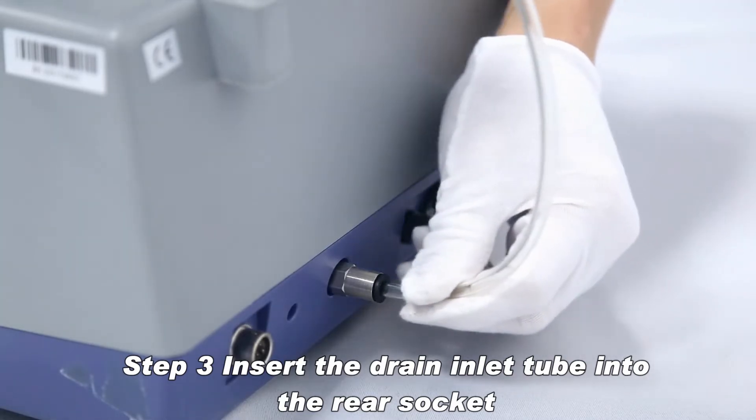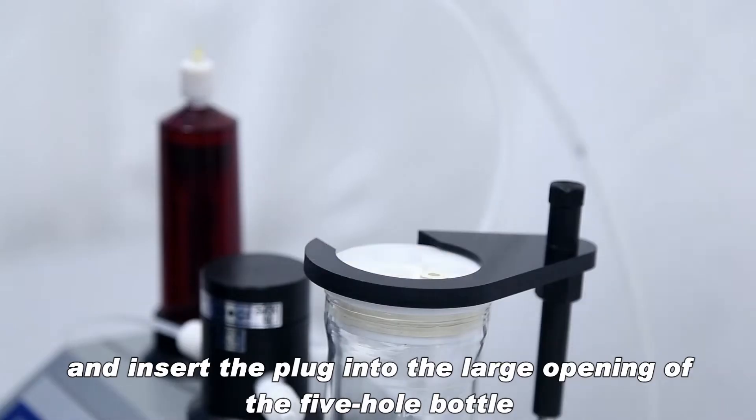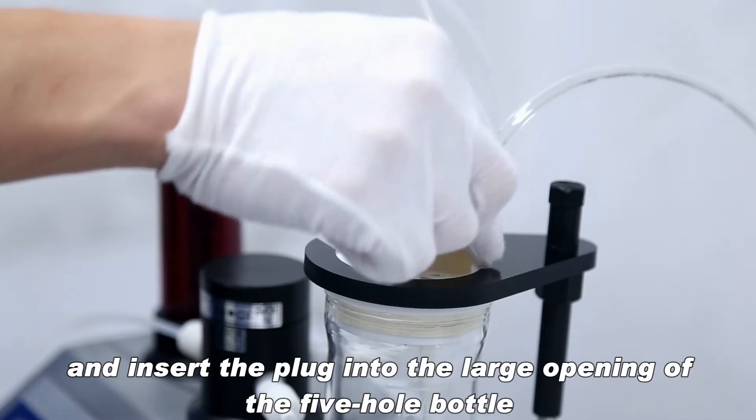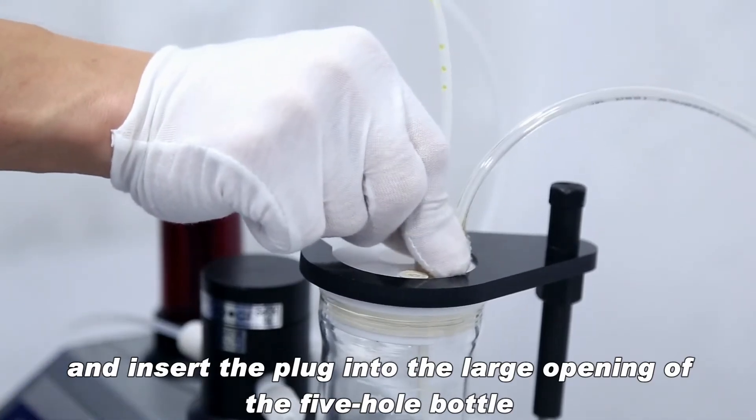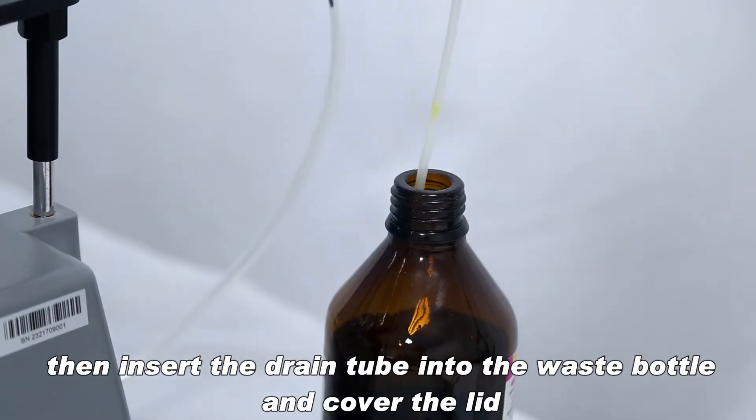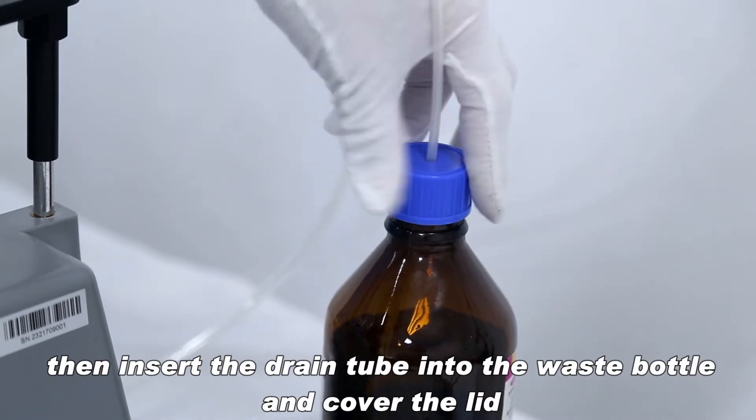Insert the drain inlet tube into the rear socket and insert the plug into the large opening of the 5-hole bottle. Then insert the drain tube into the waste bottle and cover the lid.